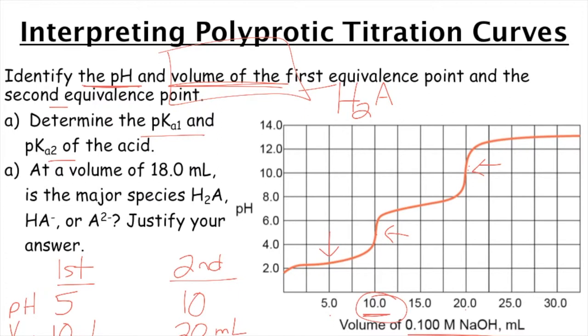Okay. And then our second one was at 20. Okay. So this one's a little bit trickier. Okay. Because you sort of have to think of these as separate things. Okay. So I'm going to draw a line right there. So you're basically starting over in terms of looking at the curve after the first equivalence point.